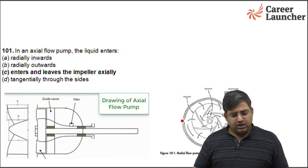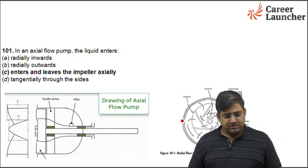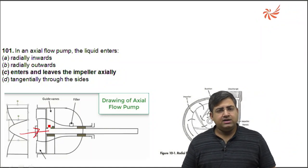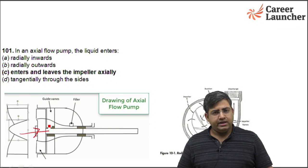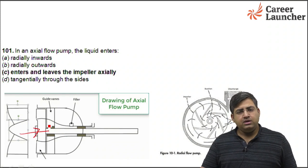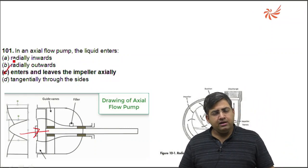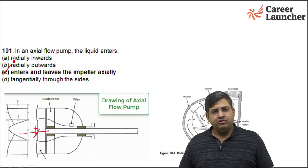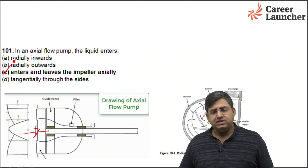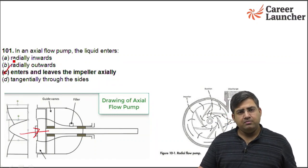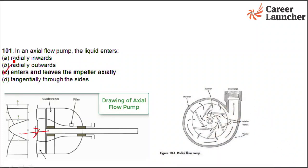The first question: in an axial flow pump, the liquid enters. In the case of an axial flow pump, the flow inward is axial and the flow outward is also axial — both along the axis of the shaft. So the right answer is C. In a radial type pump, the inlet flow is along the axis of the shaft (axial), and the outlet flow is radial — along the radius of the blade. The answer for Q101 is C.